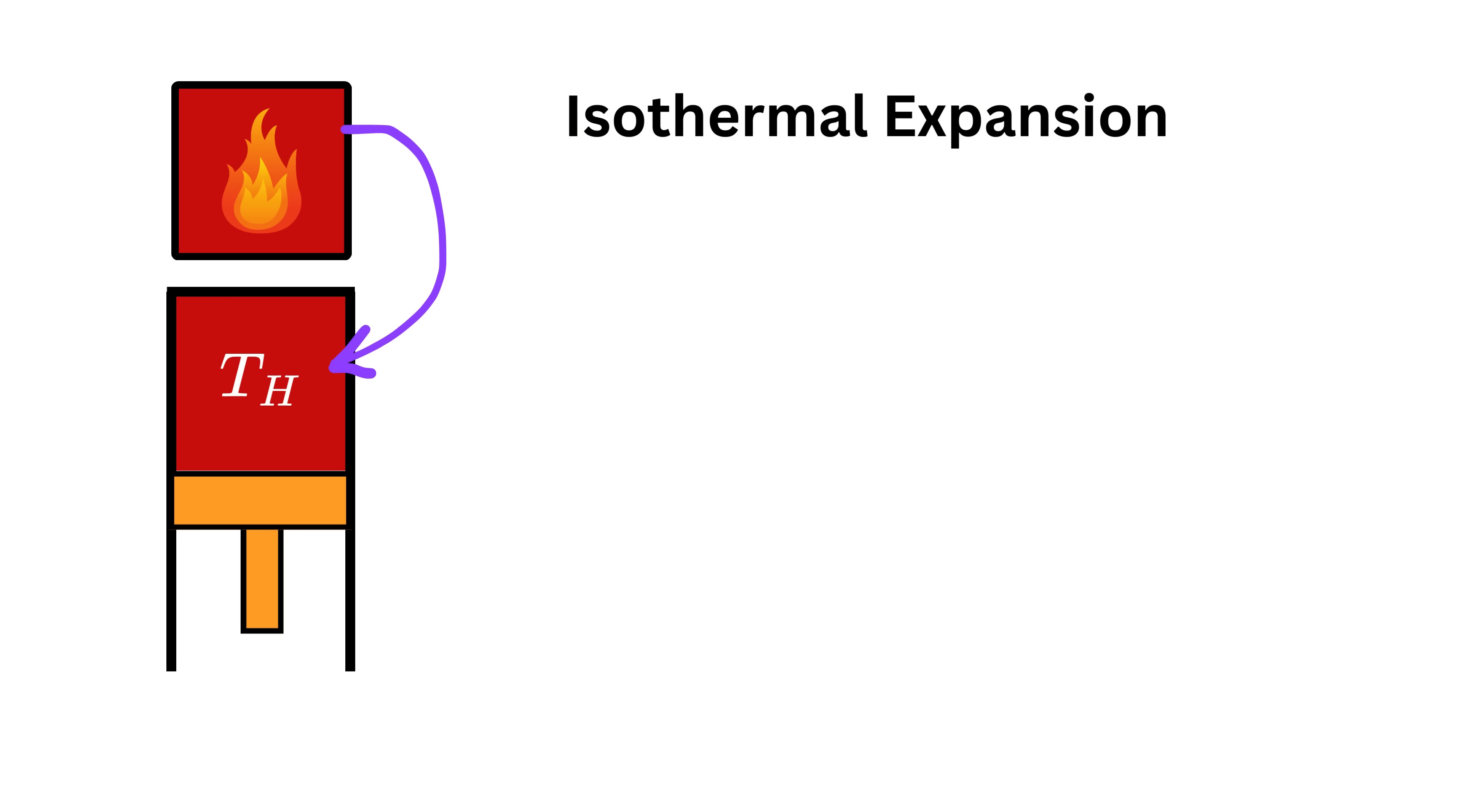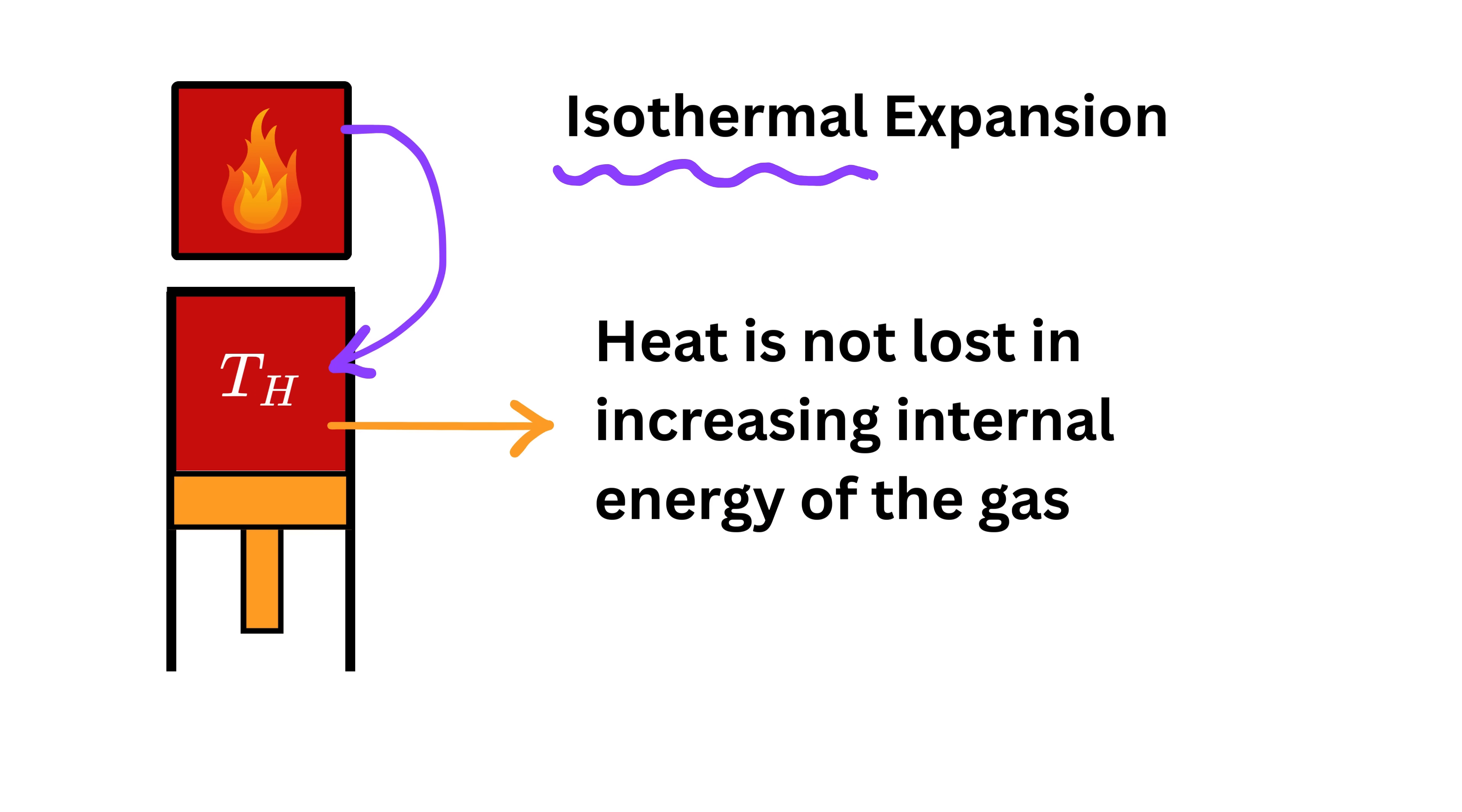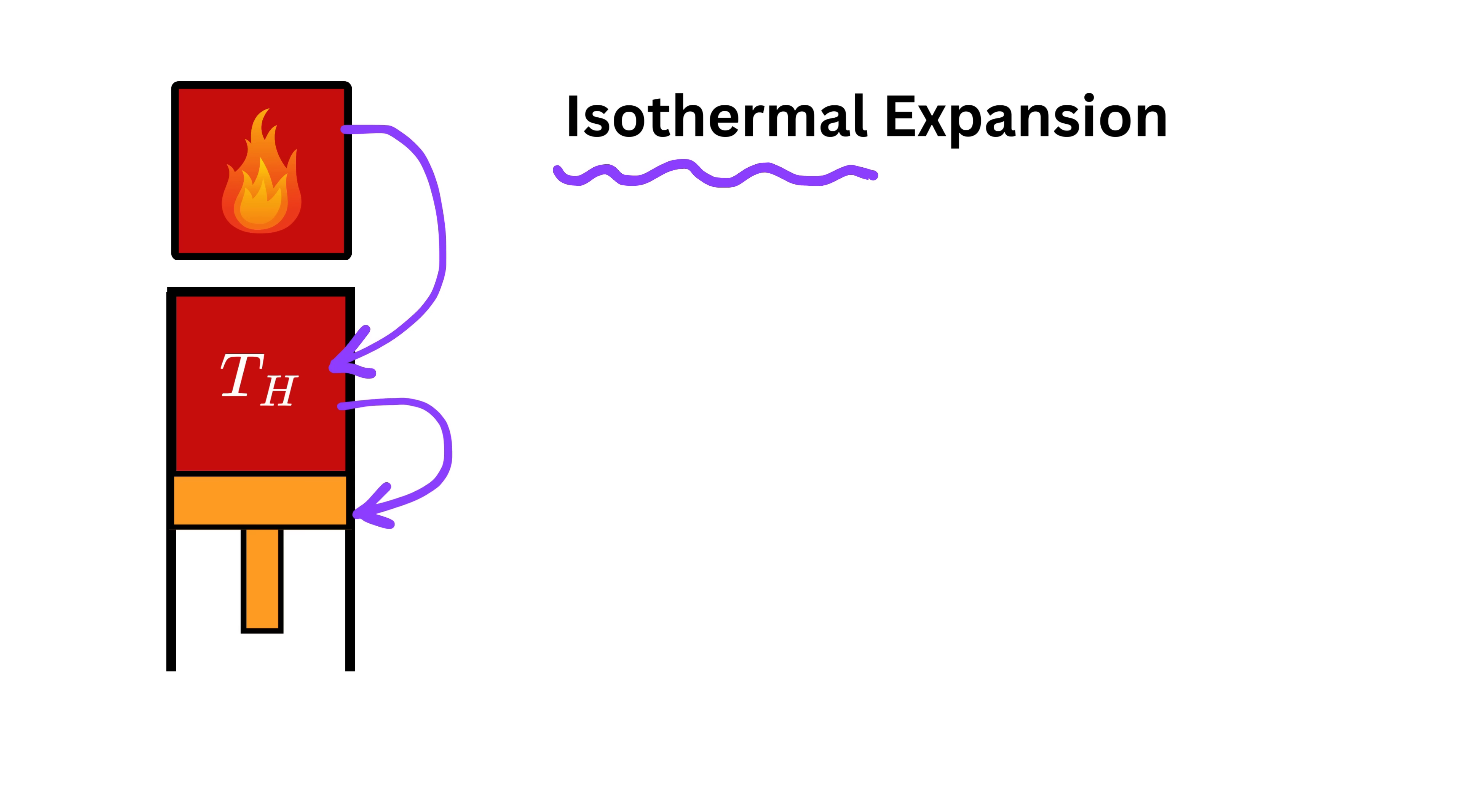Isothermal means the temperature of the gas is constant, and expansion means the gas is simply expanding. In this step, heat flows into the gas from the hot reservoir. Since the temperature is kept constant at T_h and since the process is reversible, the internal energy of the gas does not increase.